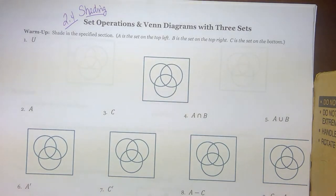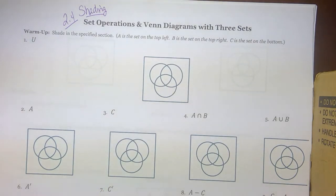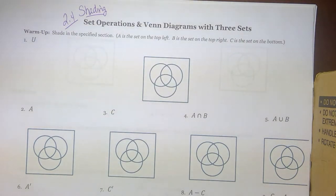In section 2-3, we focused on two-set Venn diagrams. In section 2-4, we move to three-set Venn diagrams. Now there are really two parts to this lecture. We're going to focus on shading first. You can approach three-set Venn diagrams using the same methods as the two-set, or you can use a shading approach where you look at the regions that you want to focus on specifically.